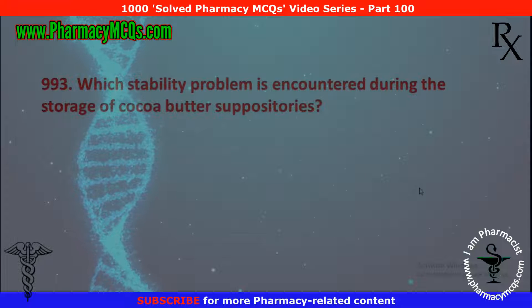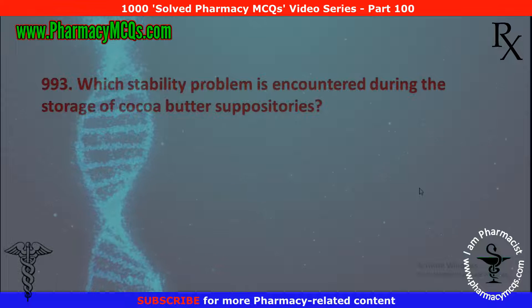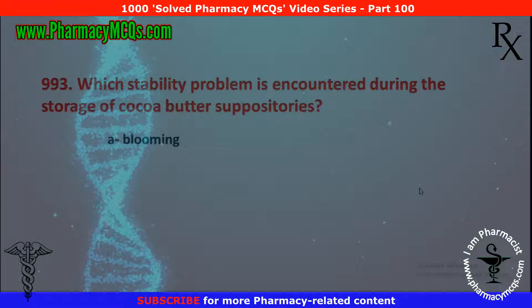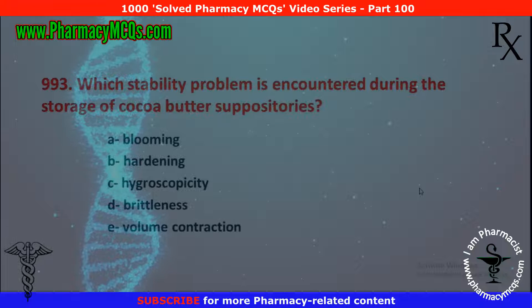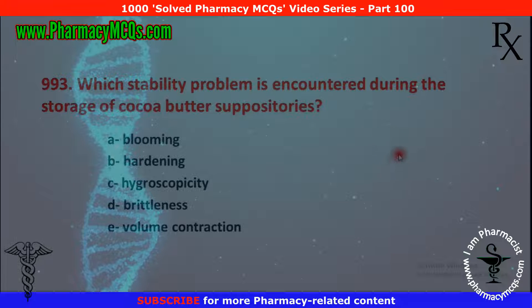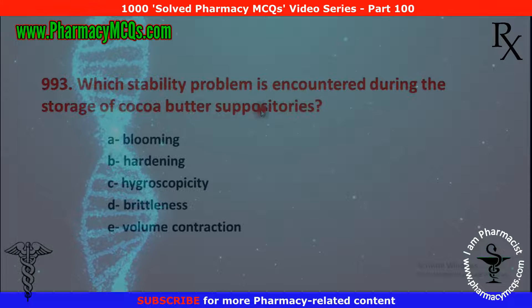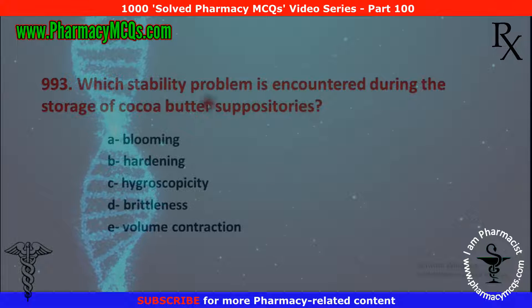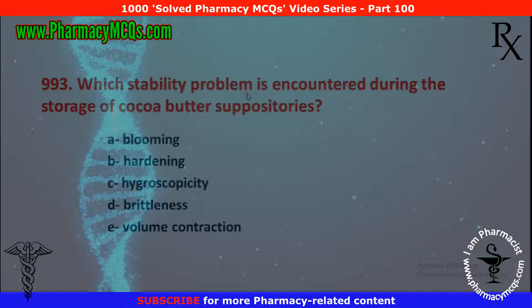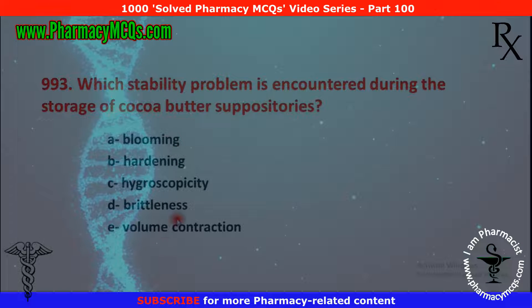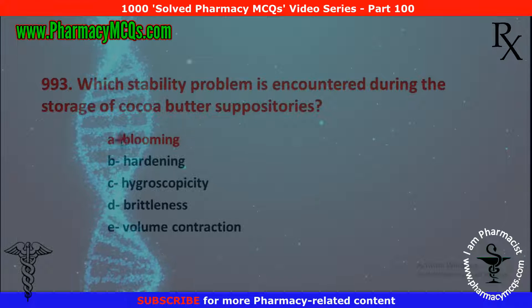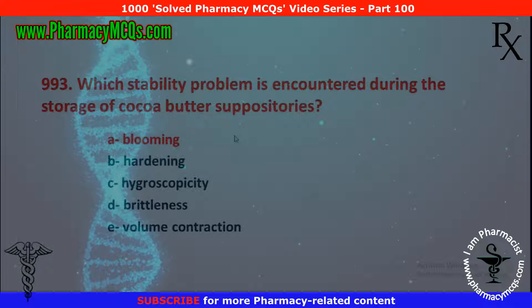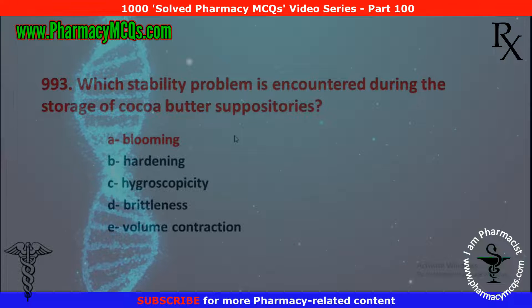Next MCQ: which stability problem is encountered during the storage of cocoa butter suppositories? Options are: blooming, hardening, hygroscopicity, brittleness, and volume contraction. Cocoa butter suppositories when stored encounter a certain stability problem — the correct option is blooming. They develop white spots on their surface, and this phenomenon is called blooming. So option A is correct.